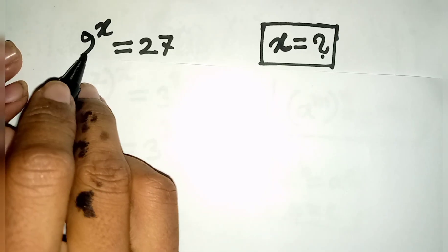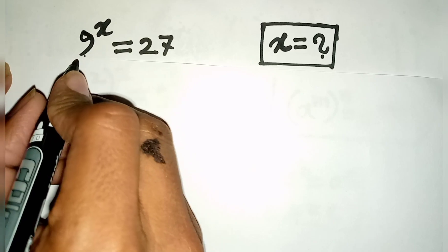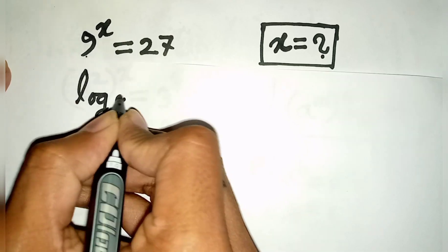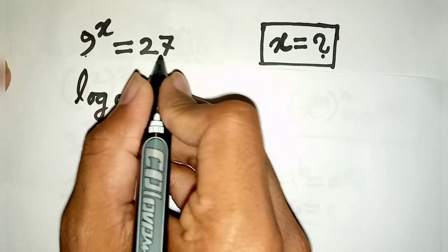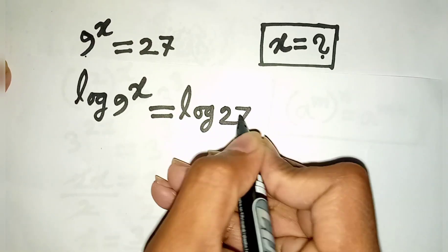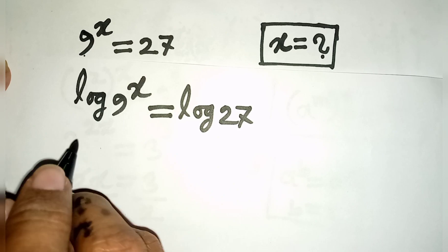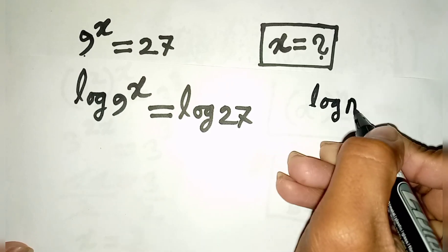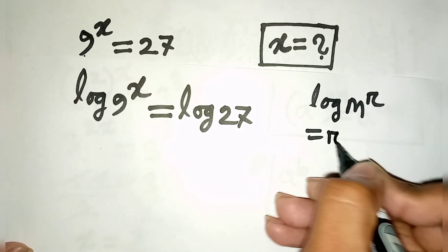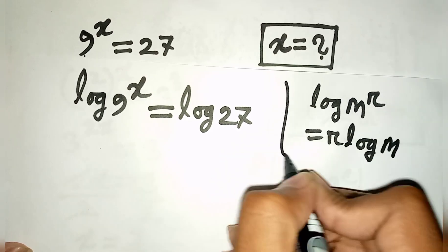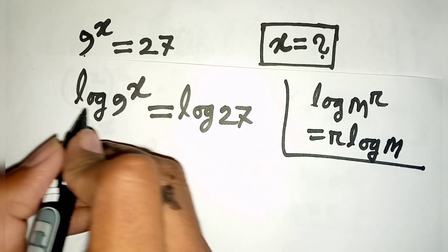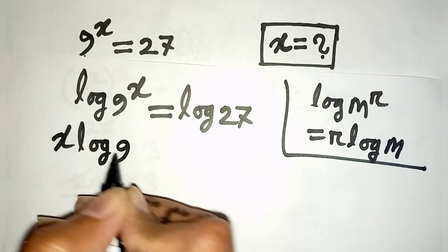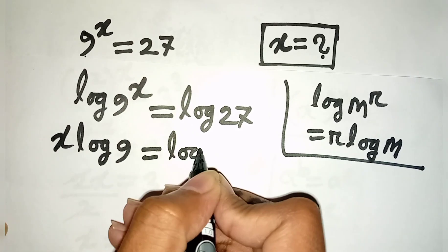Now we can apply another method to solve this problem. We take log of both sides. So we have log 9 power x is equal to log 27. Now we can apply the formula log m power r is equal to r log m. So according to this formula we can write x log 9 is equal to log 27.